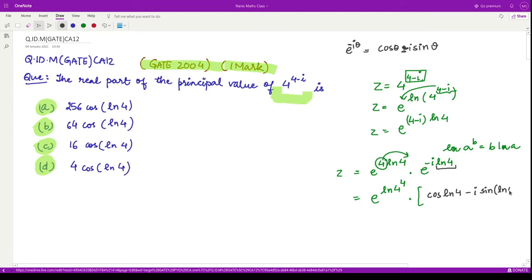From here the effect of e log cancels and we are only left with 4 to the power 4 which is 256. Moreover we have cos of ln of 4 minus iota sin of ln of 4.